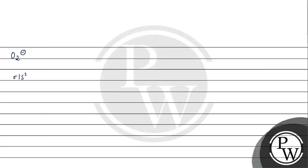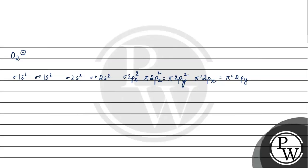Next is O2 minus. Electronic configuration: sigma 1s2, sigma star 1s2, sigma 2s2, sigma star 2s2, sigma 2pz2, pi 2px2 equals pi 2py2. We have 14 electrons, then 2 more electrons — oxygen has 16 — and then 1 electron more, meaning 17 electrons total. Pi star 2px equals 2 and pi star 2py equals 1. Number of bonding electrons: 2, 4, 6, 8, 10.